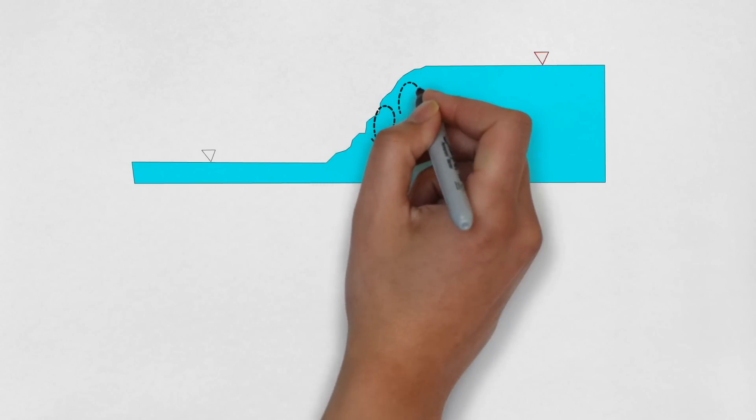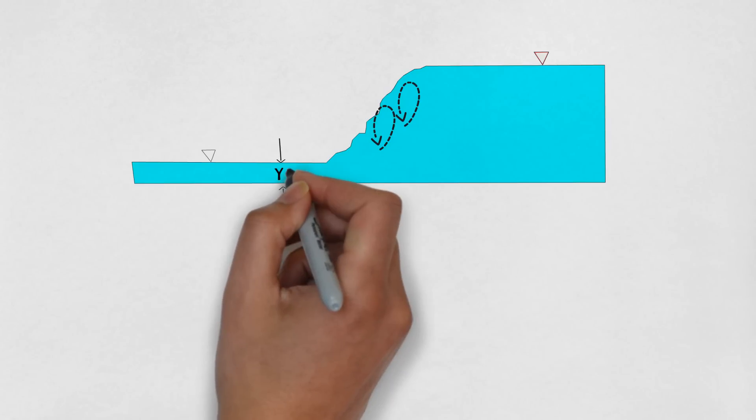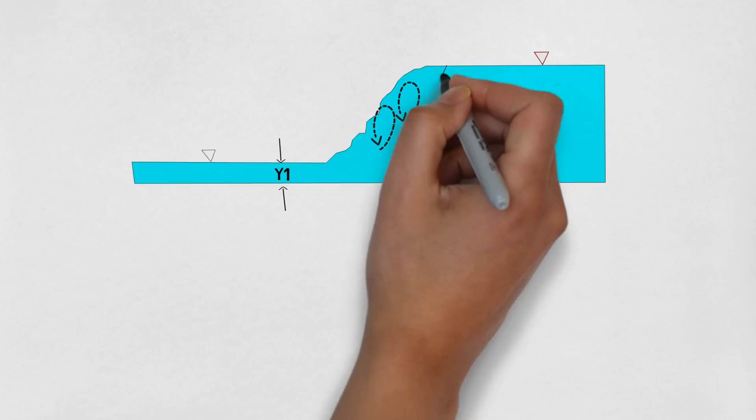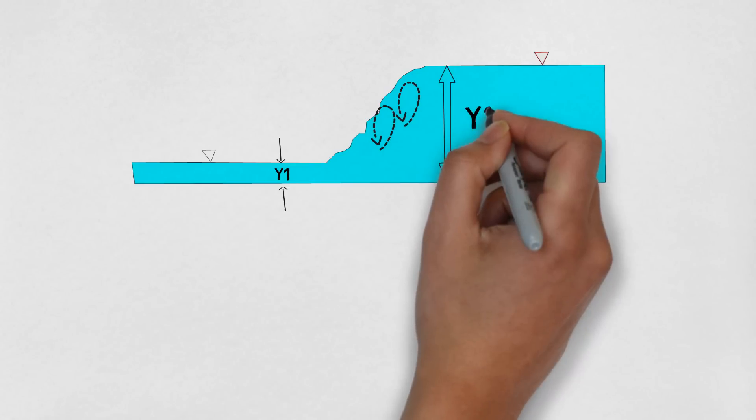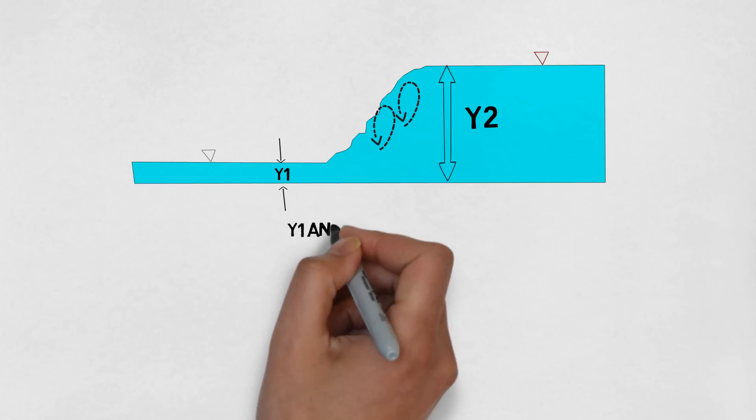The depth on the left is y1 which is the supercritical depth, the depth on the right hand side is y2 which is the subcritical depth. The y1 and y2 are also called as sequent depths since they represent the same energy.